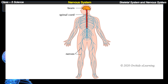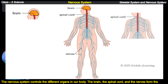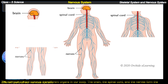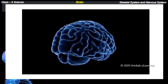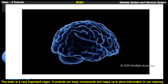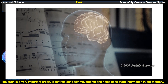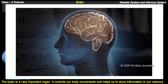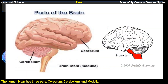The nervous system controls the different organs in our body. The brain, the spinal cord, and the nerves form the different parts of our nervous system. The brain is a very important organ. It controls our body movements and helps us to store information in our memory. The human brain has three parts: cerebrum, cerebellum, and medulla.